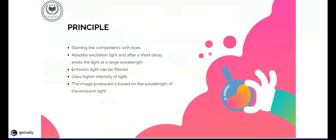Principle. Cellular components are mostly colorless and difficult to discern under a microscope. The primary idea behind fluorescence microscopy is to use dyes to stain the components. Fluorescent dyes, also known as fluorophores or fluorochromes, are chemicals that absorb excitation light at a certain wavelength, usually UV, and release light at a longer wavelength after a brief delay.